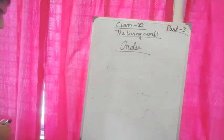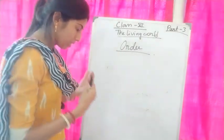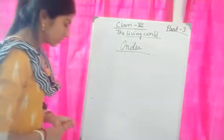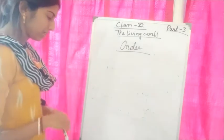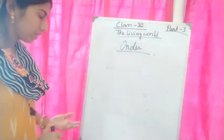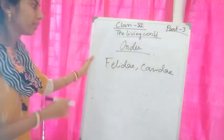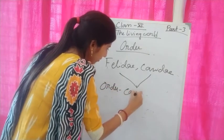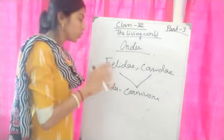The next category is order. Some families, based on similar characters, will be placed under a category called order. For example, Solanaceae and Convolvulaceae are included in the same order. Also, Felidae and Canidae — cats and dogs — were under different families, but they are under the same order: Carnivora.